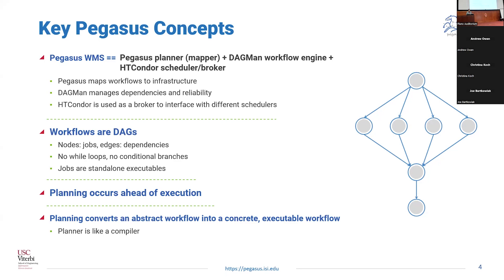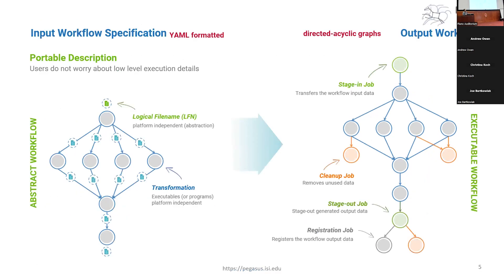Workflows are DAGs — what does that mean? There are no while loops or conditional branches supported out of the box. Jobs are standalone executables, so just an executable that needs to be invoked, so the contract which Pegasus imposes on a job is not that much. The planning process occurs ahead of execution, and you should think of Pegasus as a workflow compiler.